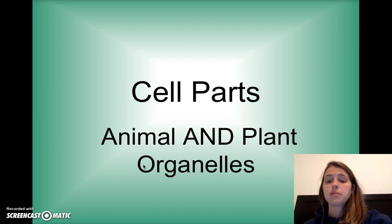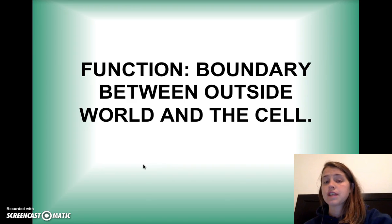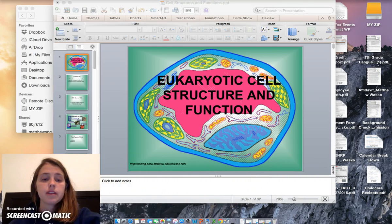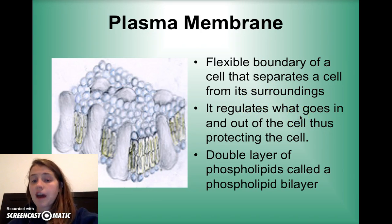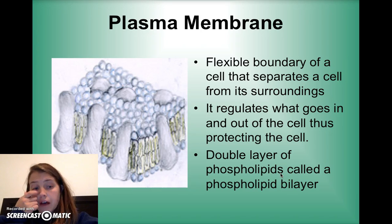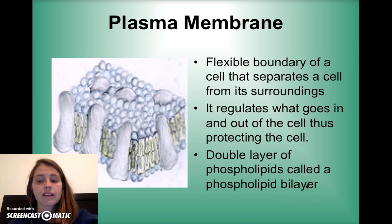Cell parts — animal and plant organelles. The following organelles serve as a boundary between the outside world and the cell. The plasma membrane is the flexible boundary of a cell that separates it from its surroundings. It regulates what goes in and out of the cell and protects it. It's made of a double layer of phospholipids — a phosphate head with a lipid tail — called a phospholipid bilayer.